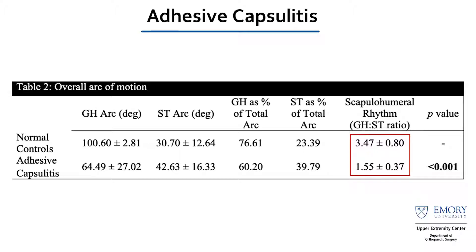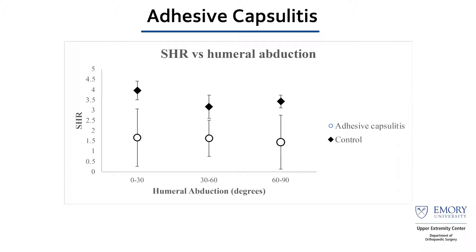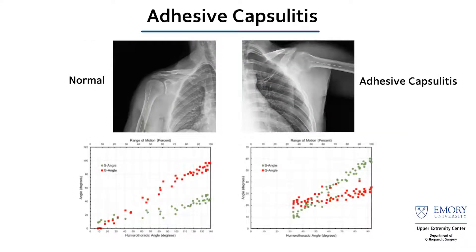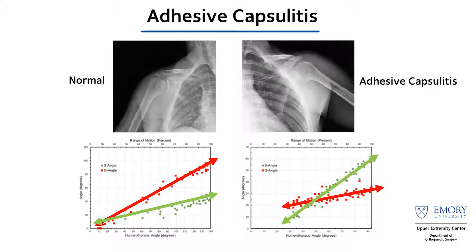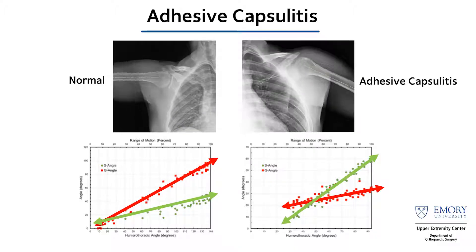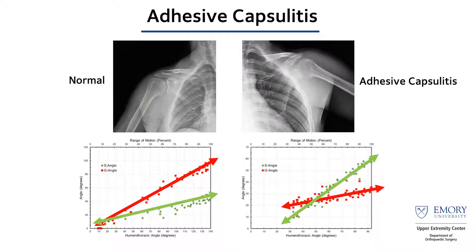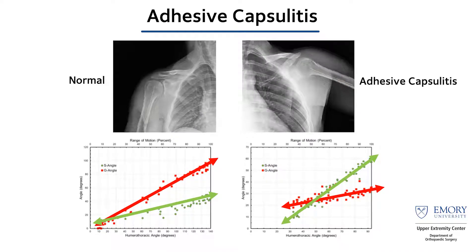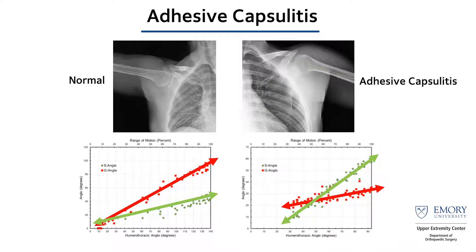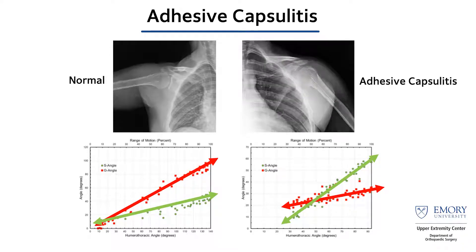This shows, across the first, second, and final 30 degrees of motion, how normal controls have much higher scapulohumeral rhythm — more glenohumeral motion relative to scapulothoracic motion. These graphs show normal controls with a relatively sharp glenohumeral angle both in abduction and adduction compared to the scapulothoracic joint, versus a very flat glenohumeral angle in the adhesive capsulitis patient and a much steeper scapulothoracic motion curve — showing that they compensate with their scapula, as many assumed but nobody has ever really quantified.